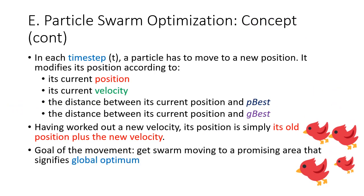In each time step, a particle moves to a new position. It modifies its position according to four pieces of information: first, its current position; second, its current velocity; third, the distance between the current position and personal best; and fourth, the distance between the current position and global best. Once the particle has calculated the new velocity, it updates its position by adding the old position and the new velocity. The goal of the movement is to get the swarm moving towards the global optimum.